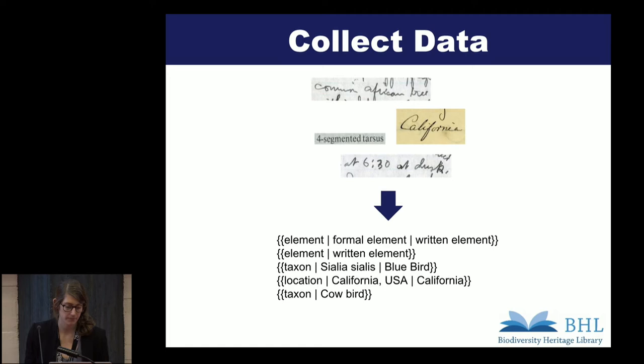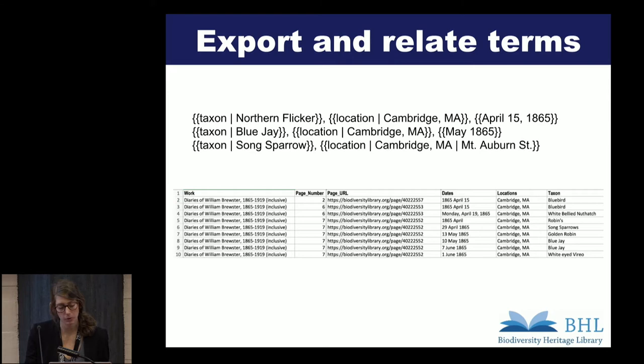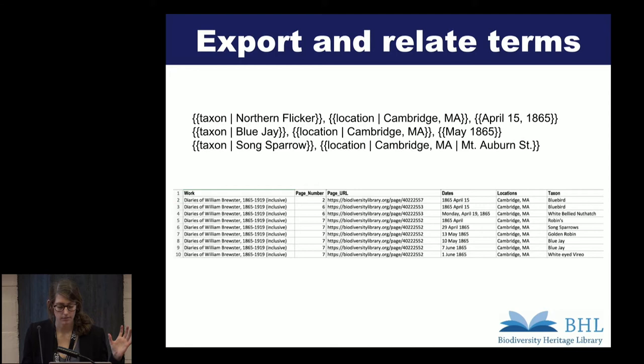Once data is tagged, we just extract it. Then we need to do some intellectual work to create the relationships between the different data that we pull out. This is going to depend on the transcription platform. Some will export the XML, some will export CSV files of tagged subjects, and some will export just the plain text without parsing anything. But in general, the idea is that you want to associate names with their locations and dates. You can see in this CSV file where each row is an occurrence record, and the columns will be the Darwin Core titles that you can use to keep going.